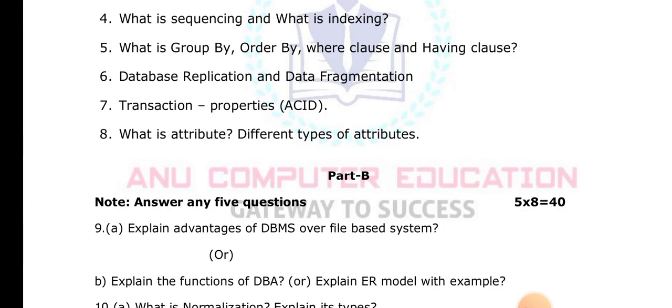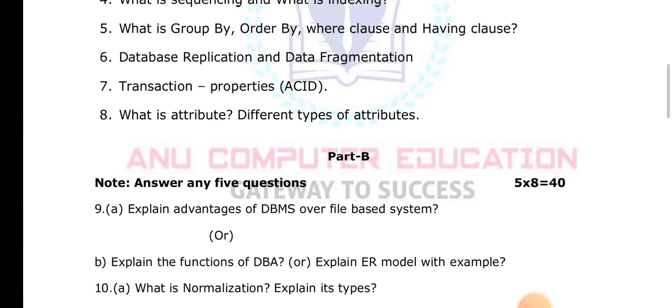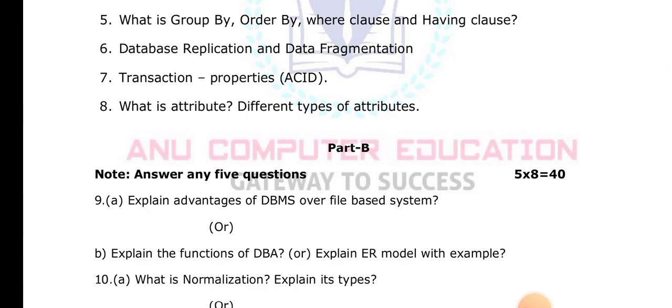You may also get a question on the ER model (Entity-Relational Model). Entities are real-world objects. Every entity has attributes. For example, a student entity has attributes like roll number, name, age, and gender. These are called the properties of an entity.